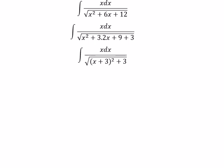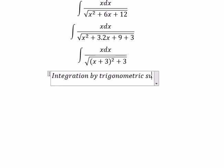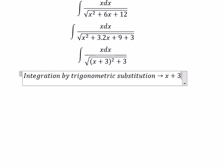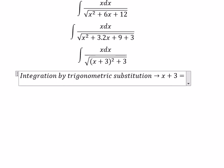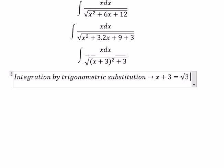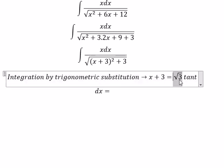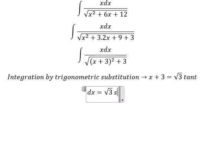Next, we need to use integration by trigonometric substitution. So we put s plus 3 equals to the square root of 3 multiplied by secant of t. So we get ds equals to the square root of 3 multiplied by secant squared of t dt.